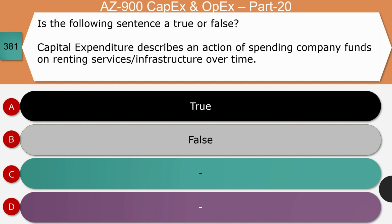First question: True or false — Capital expenditure describes an action of spending company funds on renting services or infrastructure over a period of time. The right answer is false. The reason is renting services or infrastructure is not permanent and is considered as operational expenditure, because it happens on a recurring basis — monthly, twice a week, or twice a year.